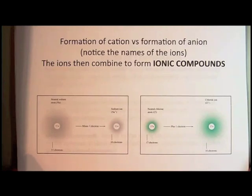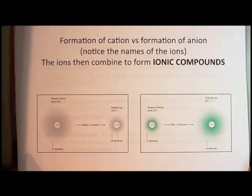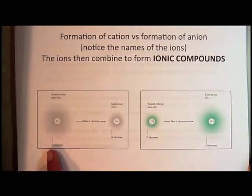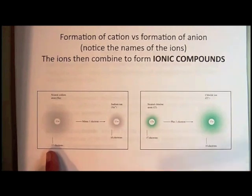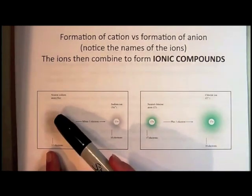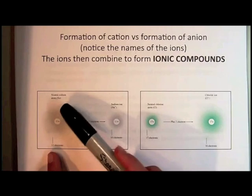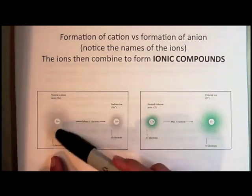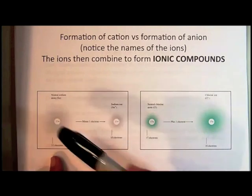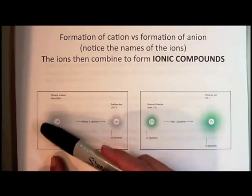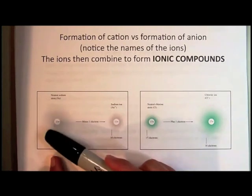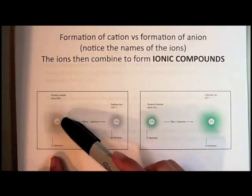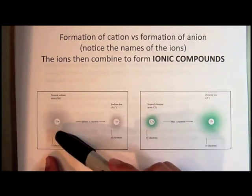A cation is formed in this way. For example, this is a model of a sodium atom. The model is showing us it has 11 protons in the nucleus. And then this is like the sea of electrons that are around the atom. There's 11 of them. These are the electrons in the particular regions around that particular nucleus. There's a total of 11 of them.